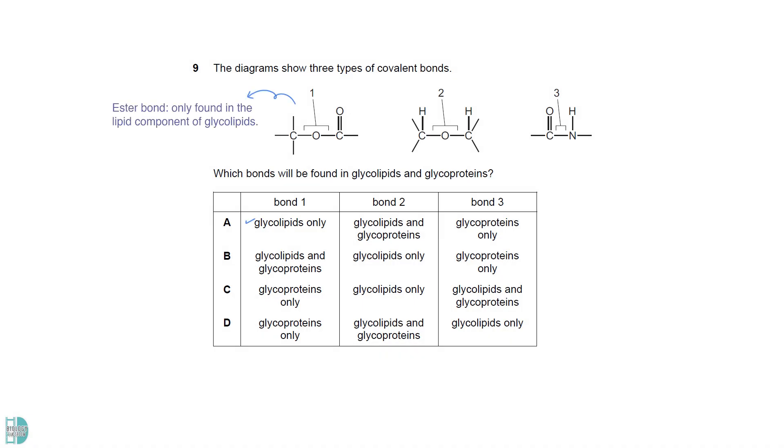1 is an ester bond. It is only found in the lipid component of glycolipids. 2 is a glycosidic bond. It is found in the carbohydrate chain of both glycolipids and glycoproteins. 3 is a peptide bond. It is found in the polypeptide of glycoprotein.